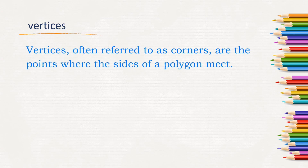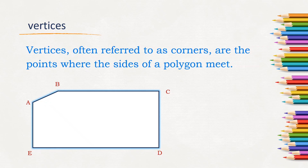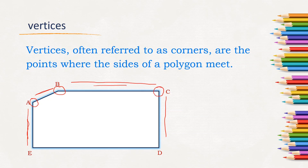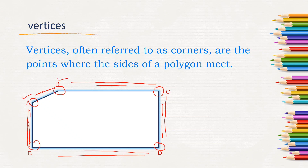Next, vertices. Vertices are the corners where two sides meet at a common point. Here, line segments AB and AE meet at point A. AB and BC meet at point B. BC and CD meet at point C. CD and ED meet at point D. DE and AE meet at point E. So the vertices of the given figure are A, B, C, D, and E.